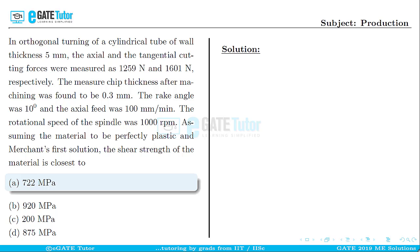This question is from production, worth two marks. In orthogonal turning of a cylindrical tube of wall thickness 5 mm, the axial and tangential cutting forces were measured as 1259 newton and 1601 newton respectively. The measured chip thickness after machining was 0.3 mm, the rake angle was 10 degrees, the axial feed was 100 mm per minute, and the rotational speed of the spindle was 1000 rpm. Assuming the material to be perfectly plastic and using Merchant's first solution, the shear strength of the material is closest to — this is a multiple choice question.